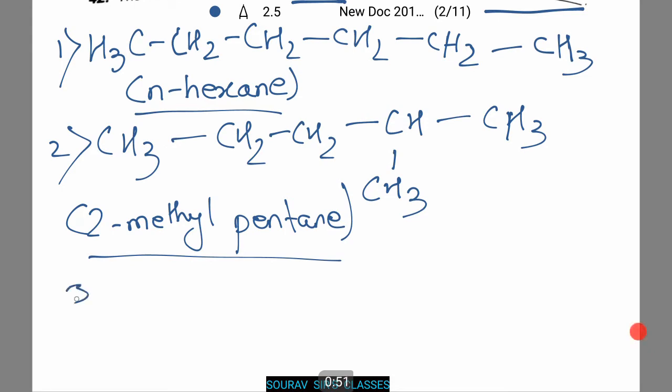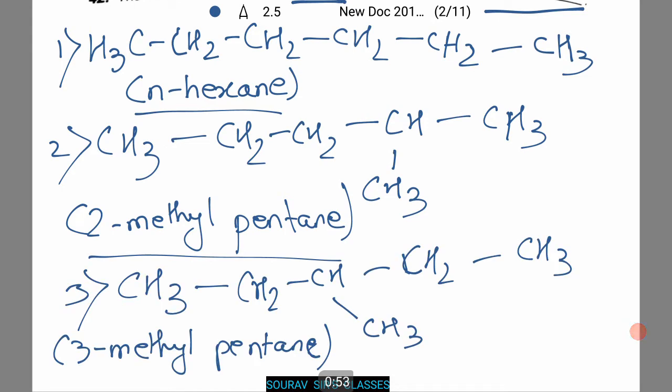The others will be CH3, CH2 and now the methyl is in the middle most chain, CH then again CH2 and lastly CH3. This is known as 3-methylpentane.